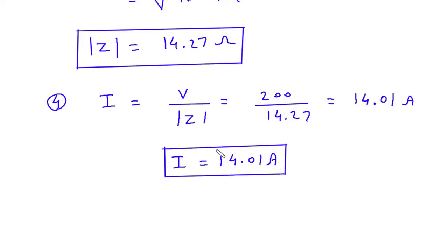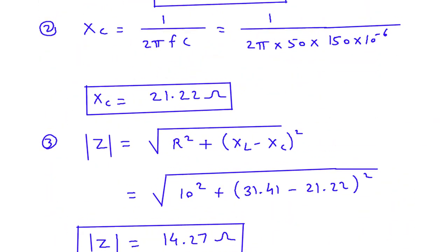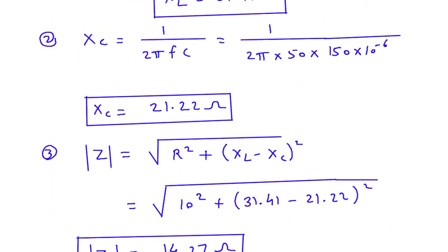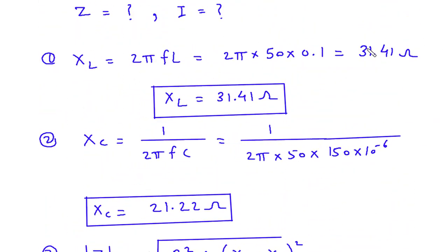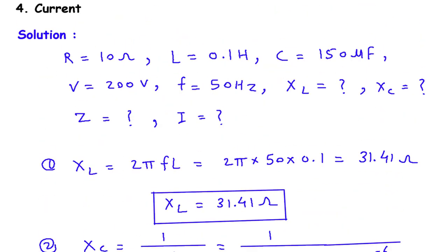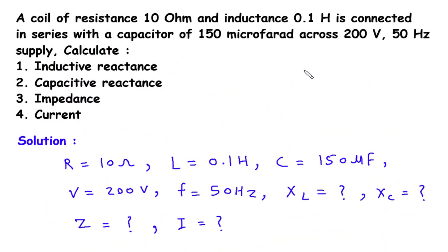So this is the value for current, this is the value for impedance, this is the value for capacitive reactance, and this is the value for inductive reactance. If you find this video helpful, feel free to donate whatever amount you can — link is in the description below. Thank you.